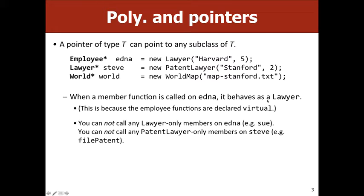This is why the whole virtual thing was so important. If you had something like Employee* Edna = new Lawyer, when you called Edna->salary, you would get the lawyer's definition of salary, not the employee's. That's why we use virtual for everything. One downside of inheritance is you can't call any lawyer-only member functions on Edna, because the compiler only knows Edna is an Employee — it's only when it's actually running that it realizes it's a lawyer.